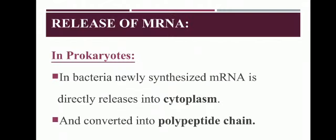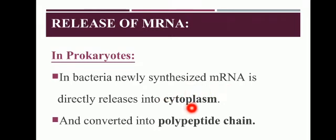Next we discuss the release of messenger RNA. In prokaryotes — bacteria — as soon as messenger RNA is formed, it directly enters the cytoplasm. This is because prokaryotes do not have a definite nucleus; their genetic material is in the cytoplasm. So when messenger RNA is copied from the genetic information, it directly comes into the cytoplasm and is converted into polypeptide, that is, protein.